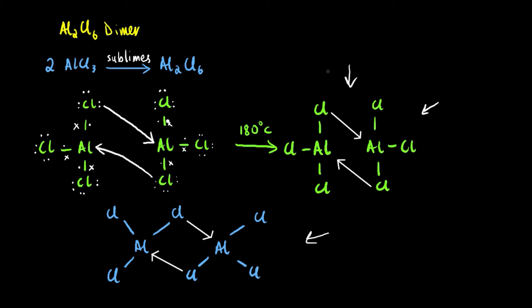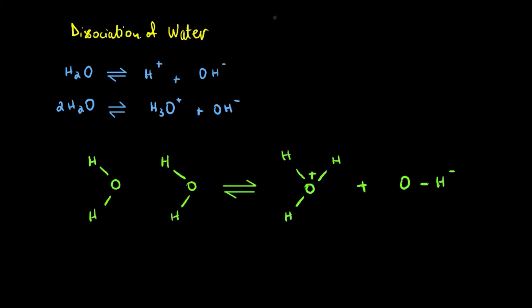The second example is the dissociation of water. Dissociation means when a compound is dissociated into its constituent ions. Water dissociates into H+ and OH- ions. Another way to write that is: two water molecules dissociate into H3O+ and OH- ions. We already studied that the hydronium ion is formed by dative bonding in the first example of acid dissociation in the previous video.